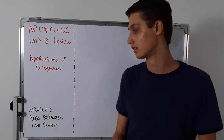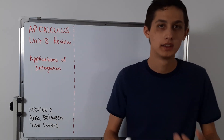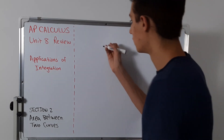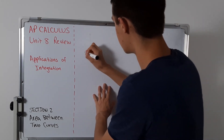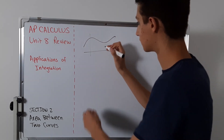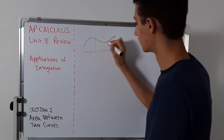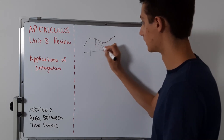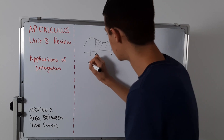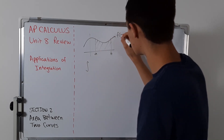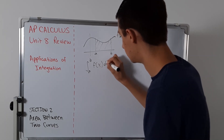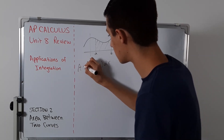The second section I want to discuss is the area between two curves. This really isn't that hard to understand. We know how to take the area under one curve — let's say we have a function here and we find the area from a to b by taking the integral from a to b of f(x) dx. This gives us the area.